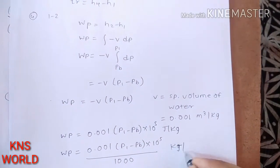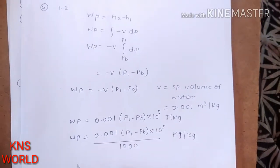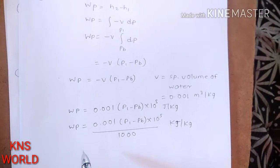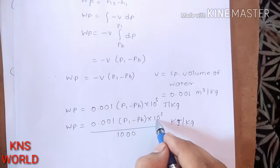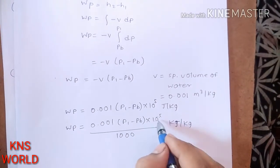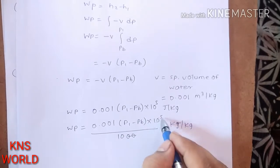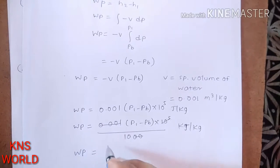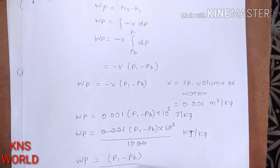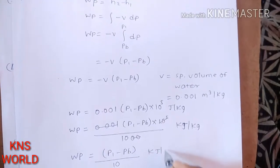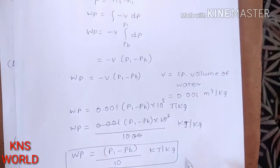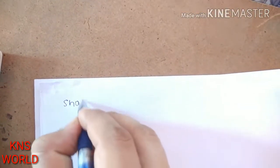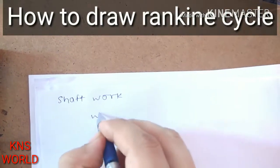Simplifying — the 10⁵ and 10³ cancel, leaving a factor of 100 — pump work WP equals (P1 minus PB) divided by 10, in kJ/kg. This is the most important equation for pump work. Shaft work WS equals turbine work minus pump work.